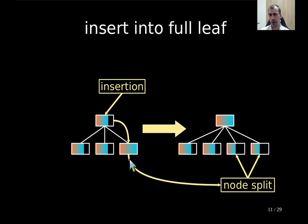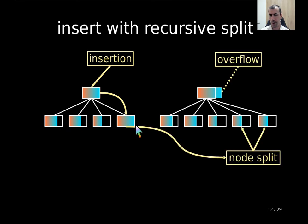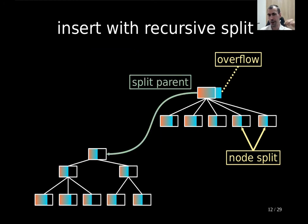What happens if the parent is also full? If we add a new key to a full leaf and split it into two, we need to add a comparator and a pointer to the parent node, but the parent can no longer store that — it's overflowing. So we recursively split and climb up until either the B-tree property is satisfied or we reach the root.